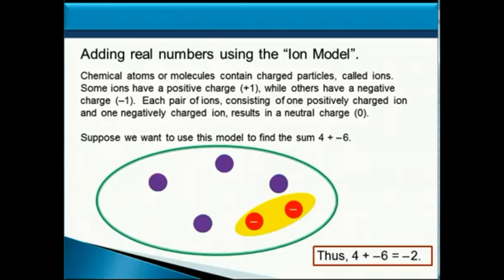I think this model is really useful for trying to add positive and negative numbers, and that really has to do with the net result. So if you have positive 4 plus negative 6, you can think of it as having 4 positives and 6 negatives. There are 2 more negatives than there are positives, so your net charge would be negative 2.